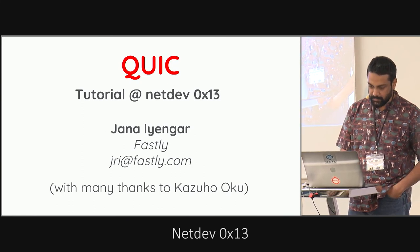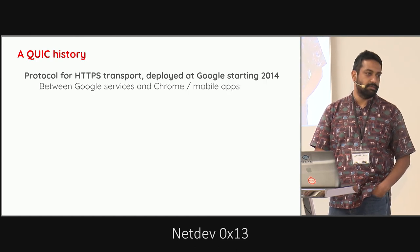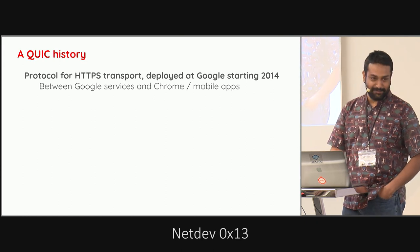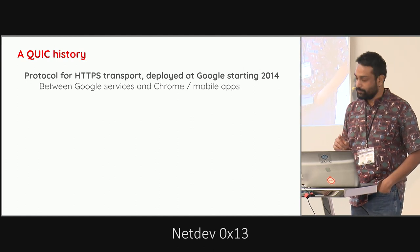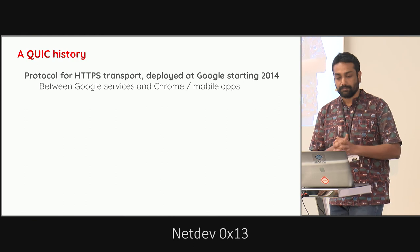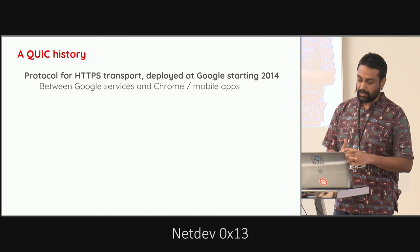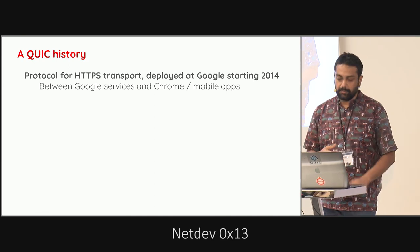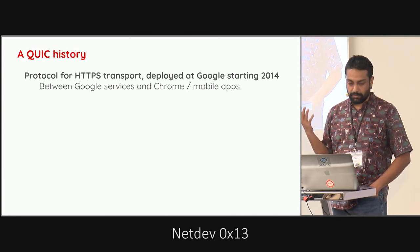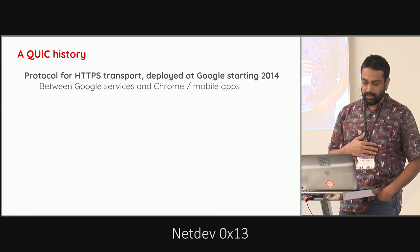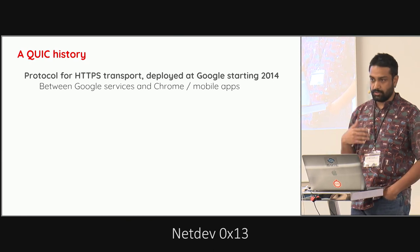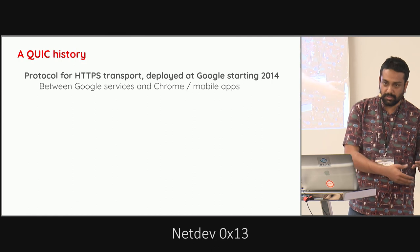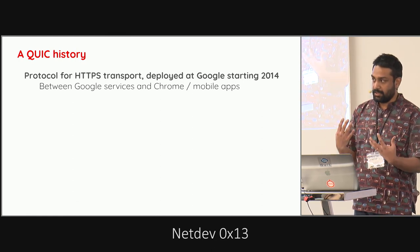So, how many of you are familiar with QUIC? I'll start with a very quick history of what QUIC is. It's basically a protocol for HTTPS transport and it was deployed at Google starting in 2014. I used to work at Google and moved to Fastly about a year ago. The protocol was deployed between Google services and Chrome and mobile apps — Google had control over all the servers, Chrome, and first-party mobile apps like YouTube and Google Search on Android. QUIC was deployed as an application-level transport sitting on top of UDP on both sides.